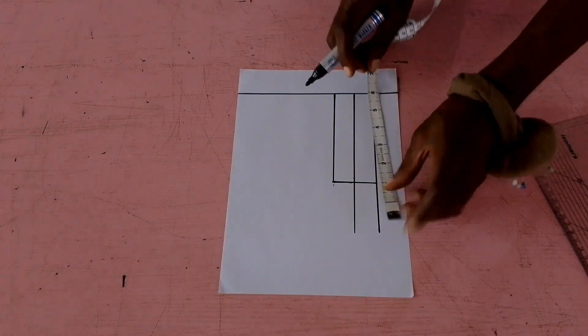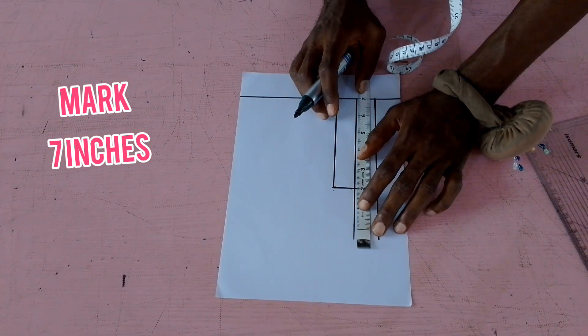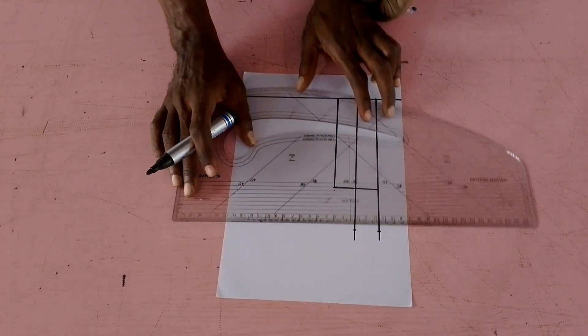How high is this? Mark seven inches for the height of that extension. Then use your ruler to connect.